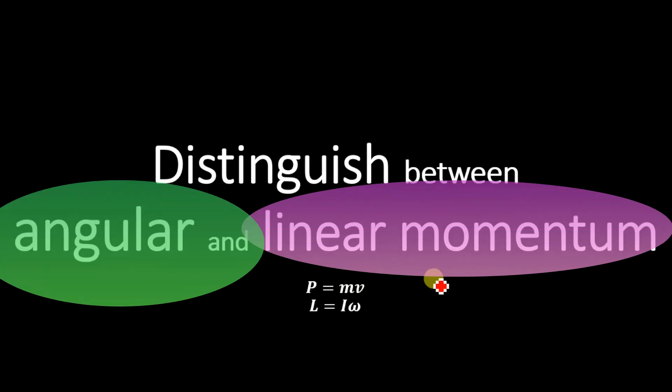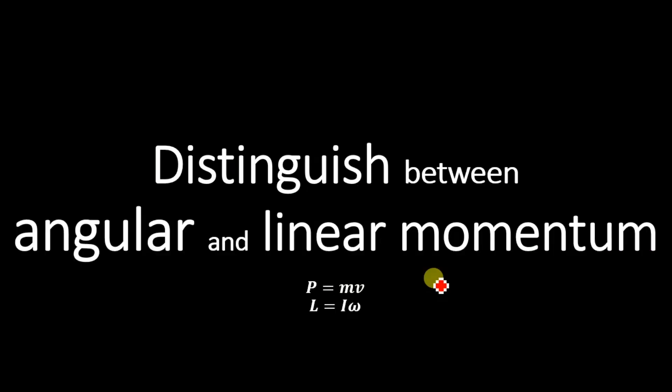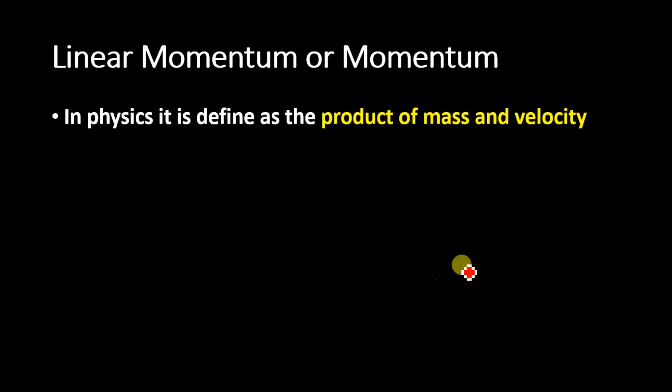We will distinguish between angular and linear momentum. In physics, linear momentum is defined as the product of mass and velocity.